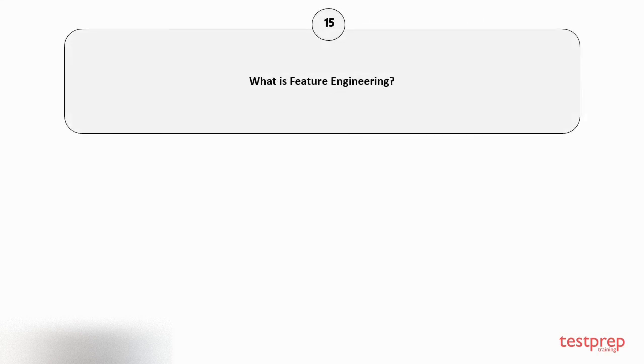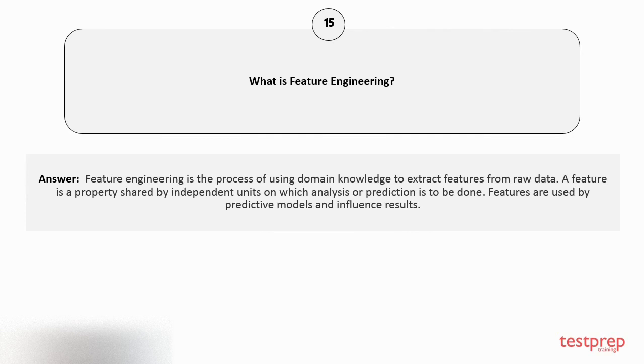Question number fifteen: What is feature engineering? Feature engineering is the process of using domain knowledge to extract features from raw data. A feature is a property shared by independent units on which analysis or prediction is to be done. Features are used by predictive models and influence results.